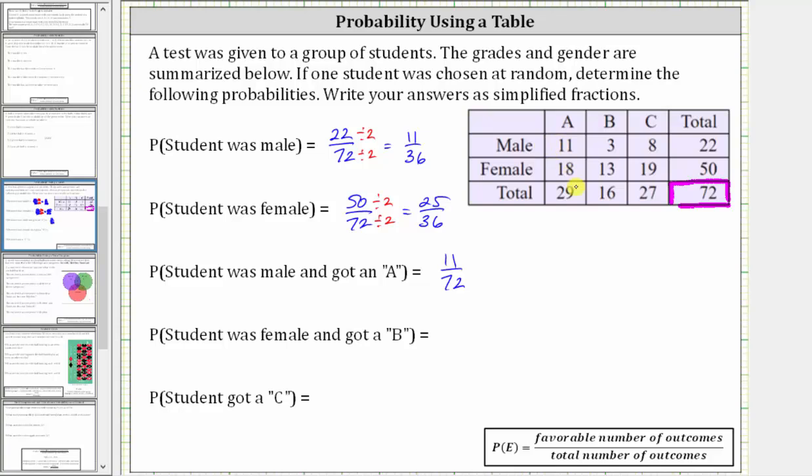The next probability is that the student was female and got a B. Females are in this row and Bs are in this column. The number of females that got a B was 13. 13 is the favorable number of outcomes out of a total of 72 outcomes. Therefore the probability the student was female and got a B would be 13 divided by 72, or 13/72, which again does not simplify.